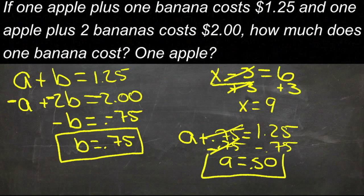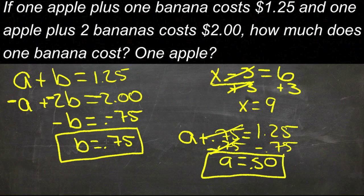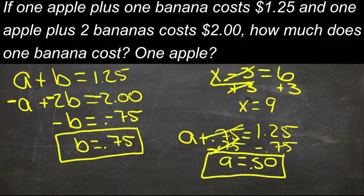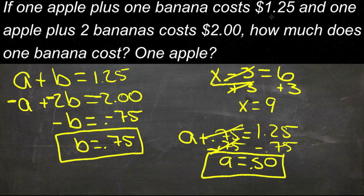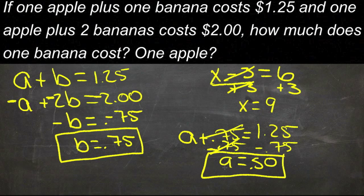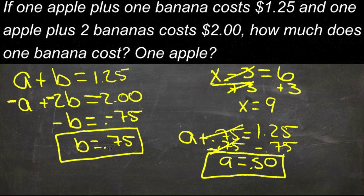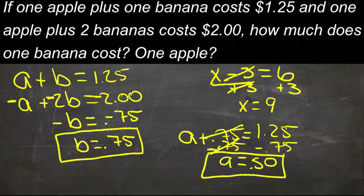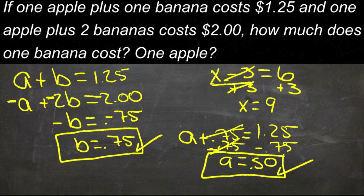So that means that the apples are 50 cents, and the bananas are 75 cents. And we can check that really quickly by adding them together. One apple and one banana is $1.25, which is what we had listed. And then one apple for 50 cents and two bananas, which would be $1.50, adds up to be $2, which is the other statement we had. So those two values are correct.